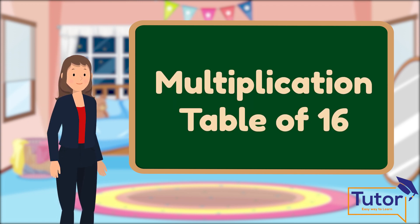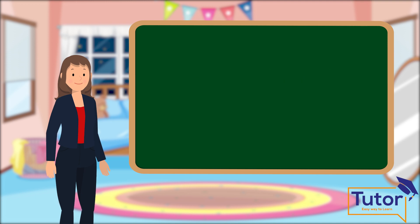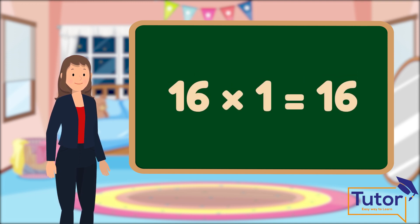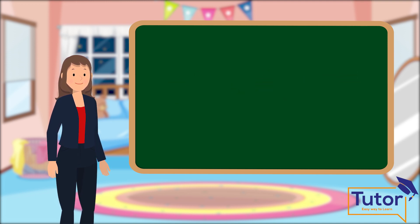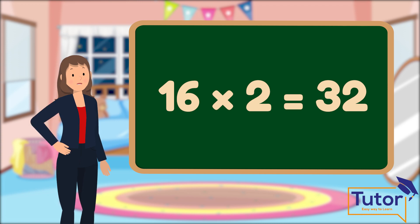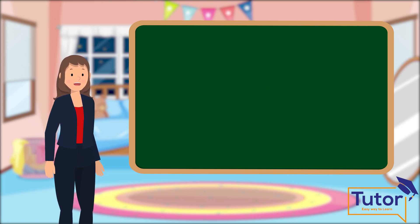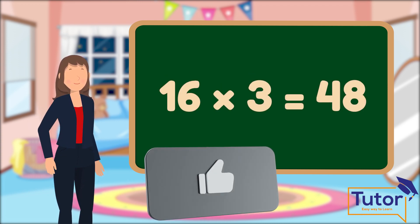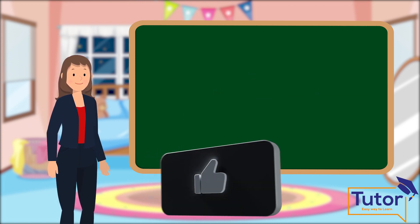Multiplication table of 16. 16 into 1 equals 16. 16 into 2 equals 32. 16 into 3 equals 48.